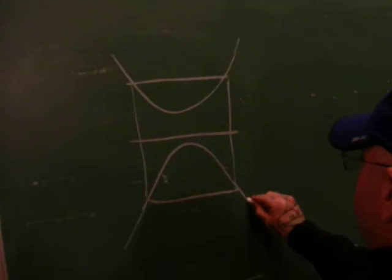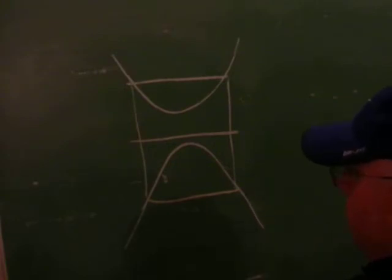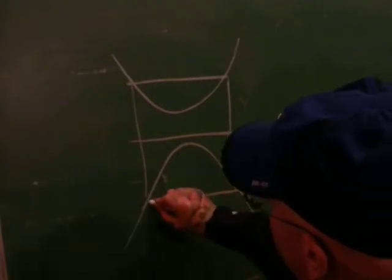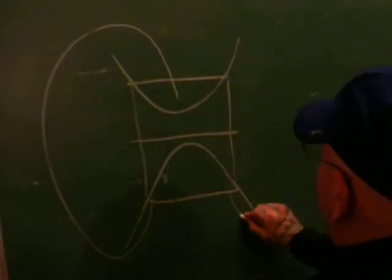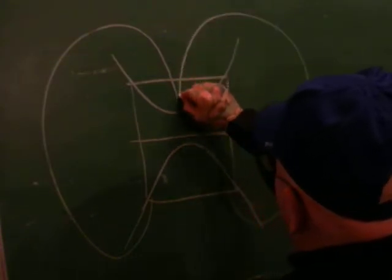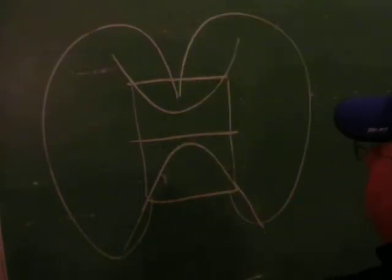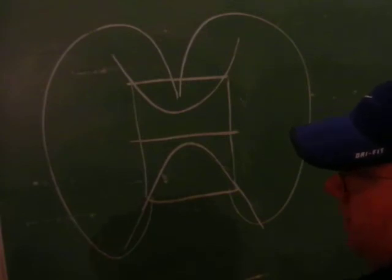Dielectricity is charging. All charge necessitates discharge. All centrifugal necessitates centripetal. All divergence necessitates convergence. It is literally that simple. Here we have our centrifugal and our returning centripetal. Same thing on both sides. Centrifugal divergence, centripetal convergence.